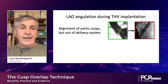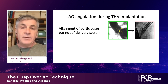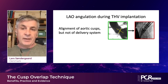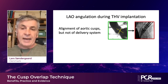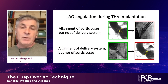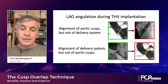Traditionally, we have used this LAO angulation during the implantation, and we can on the software — Tremensio or other software — decide where is the co-planar view where we have all three cusps aligned with the imaging plane. The problem is, if you choose that plane, often we'll see that we have some parallax in the delivery catheter — the delivery catheter is not aligned with the imaging plane. And we can adjust the C-arm to get the delivery system aligned with the imaging plane, but then often what happens is that the three aortic cusps are not aligned anymore.